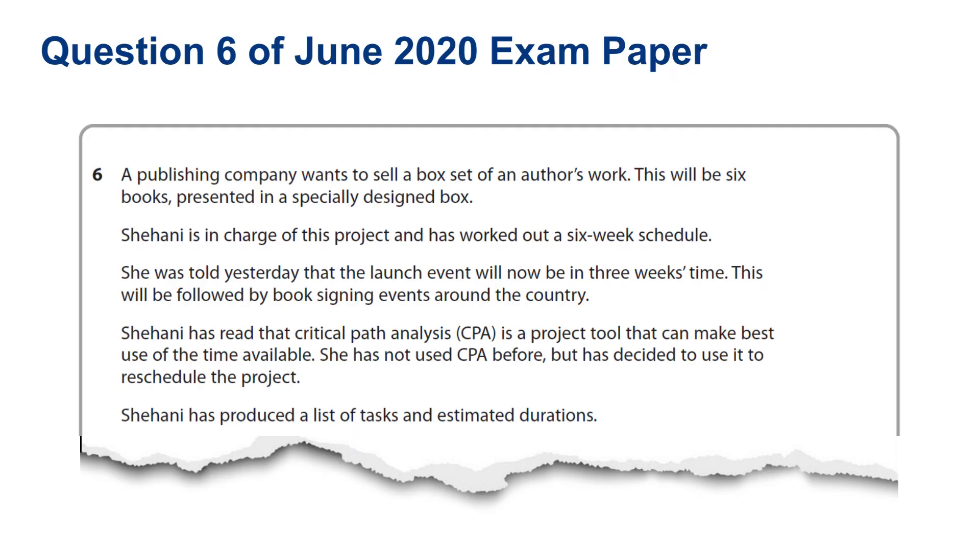Let's start by looking at the question. A publishing company wants to sell a box set of an author's books - six books presented in a specially designed box. Shehani is in charge of this project and has worked out a six-week schedule. She was told yesterday that the launch event will now be in three weeks' time, followed by book signing events around the country. Shehani has read that Critical Path Analysis is a project tool that can make best use of the time available. She has not used CPA before but has decided to use it to reschedule the project. Shehani has produced a list of tasks and estimated durations.